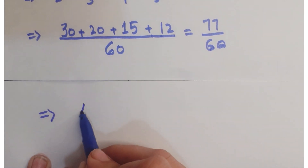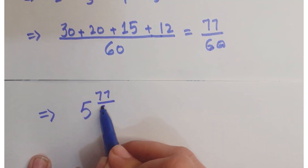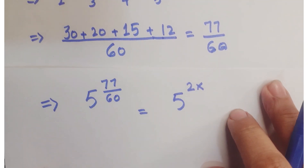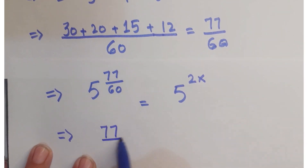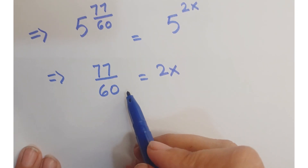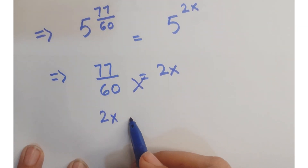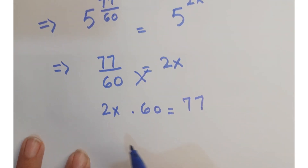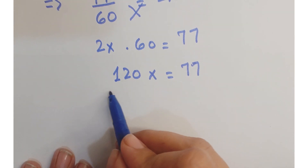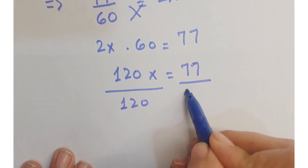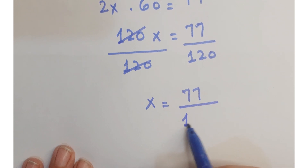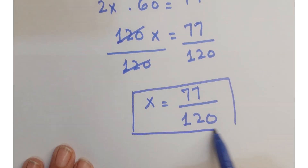This implies that 5 to the power 77/60 is equals to 5 to the power 2x. Here we have the same bases, so the exponents are equal — that is 77/60 is equals to 2x. By cross multiplication you get 2x × 60 = 77, further 120x = 77. Dividing both sides by 120, we get x is equals to 77 upon 120, and this is our required answer.